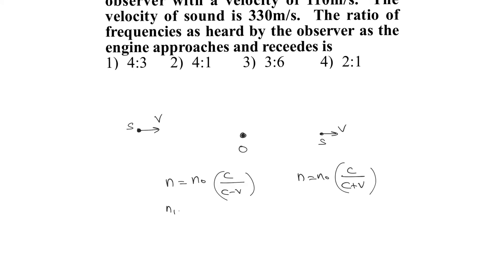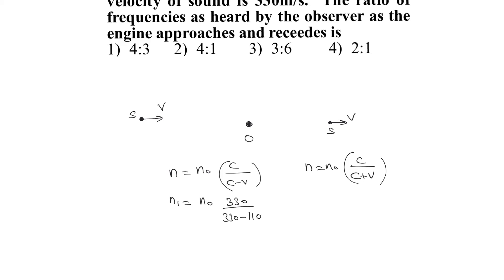As it is approaching, the apparent frequency n1 is n0 times 330 divided by 330 minus 110. When it is moving away, the apparent frequency n2 is n0 times 330 divided by 330 plus 110.